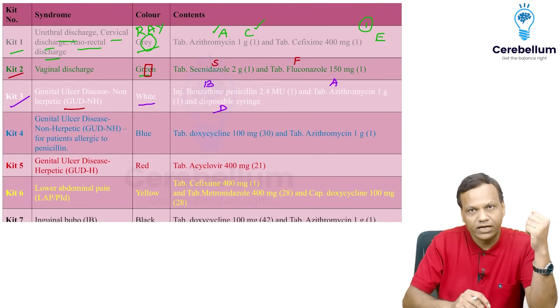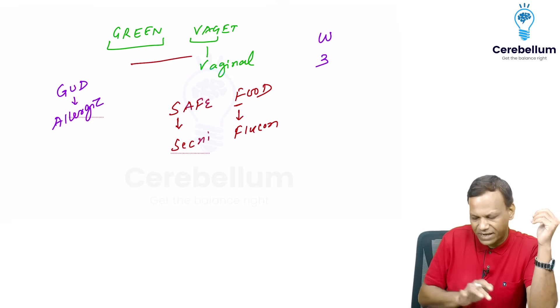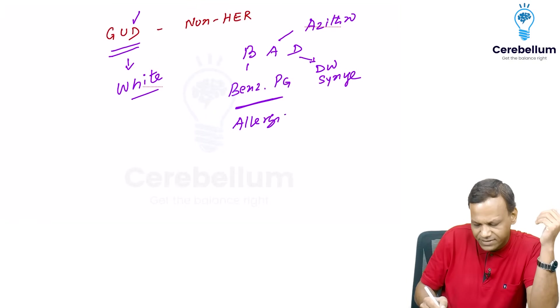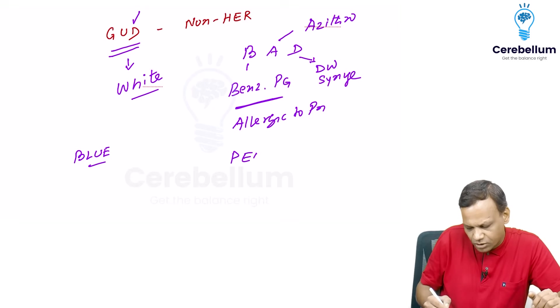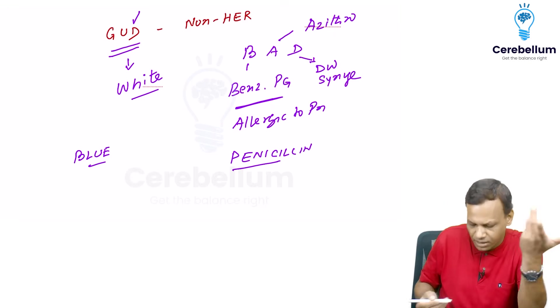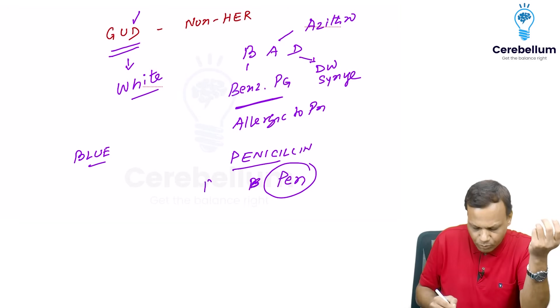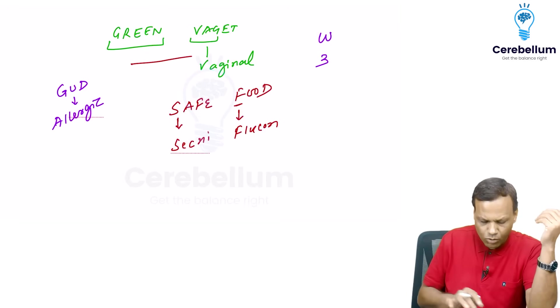Then kit four. Kit four is same for genital ulcer disease. But when it is allergic to penicillin, remember main treatment is penicillin. So we are using penicillin treatment mainly benzathine penicillin. When it is allergic to penicillin, then what we will do? So the color is blue. So when we say when the person is allergic to penicillin, so it is saying that pencil se allergy hai. So if pencil use nahi karna hai, then we will give pen. If not using pencil, we'll give pen. Pen mostly which color we use? Blue color we use. So it is blue.